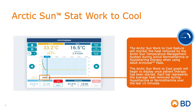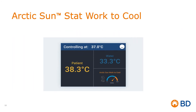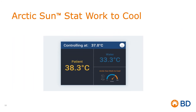When the gauge is displaying orange, it is an indication that the system is working hard to cool and that the patient should be assessed for shivering, seizure, fever, internal bleeding, or other causes of heat generation. The Work2Cool gauge is also displayed on the lock screen, providing real-time feedback about your patient's response to therapy.